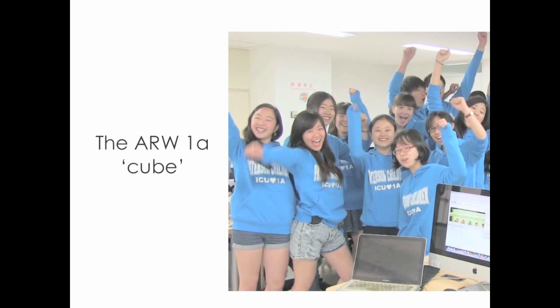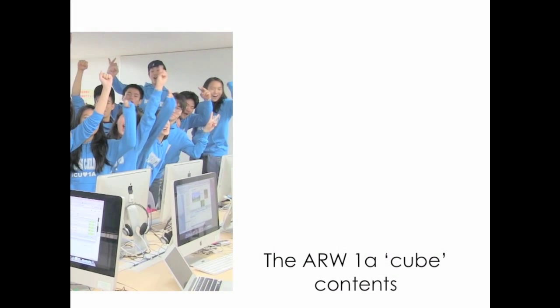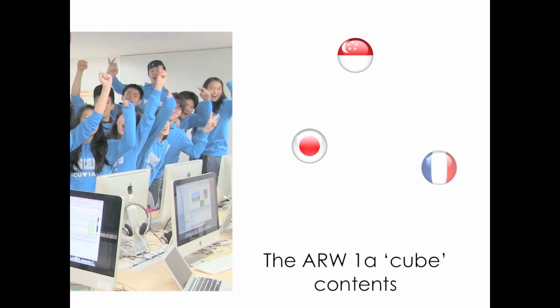Arrangement is the next one, and this is referring to the elements on the actual slide. Here I've got half a photo of my students — I've called them the ARW1 cube for reasons from the first presentation. We can see that the photo wraps around in a cube shape.